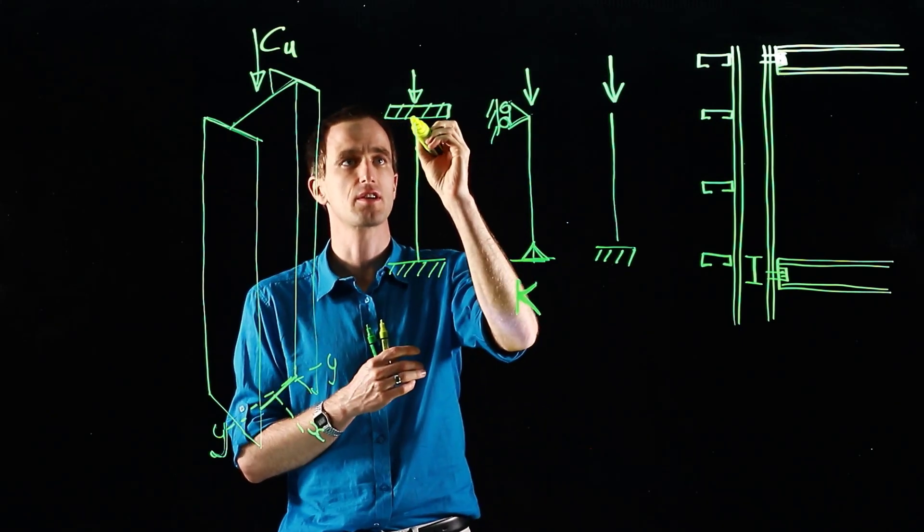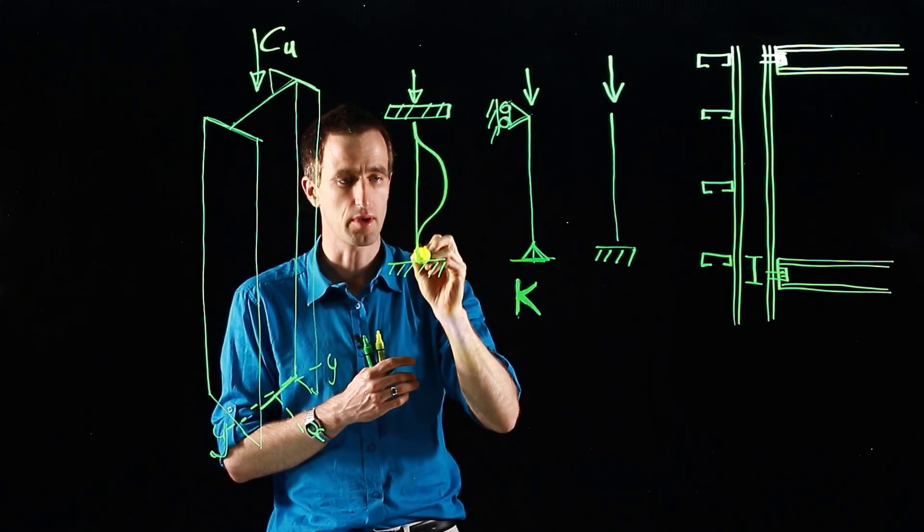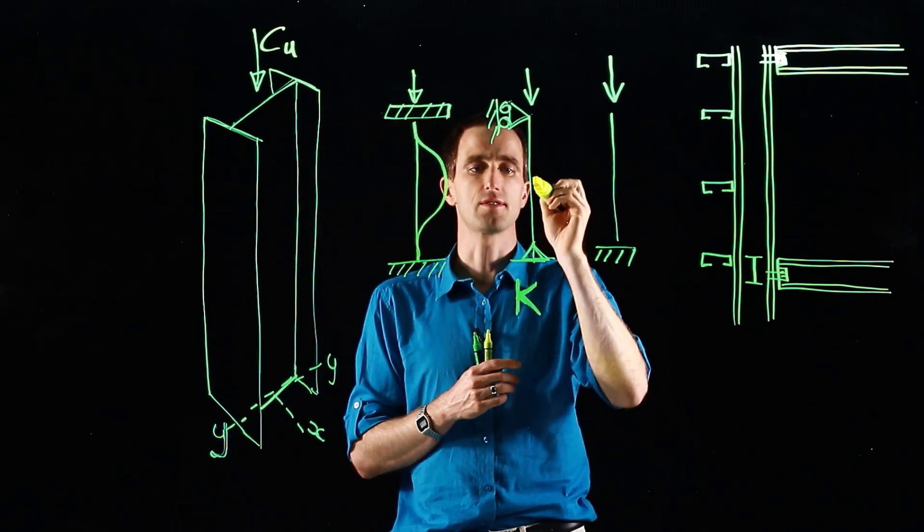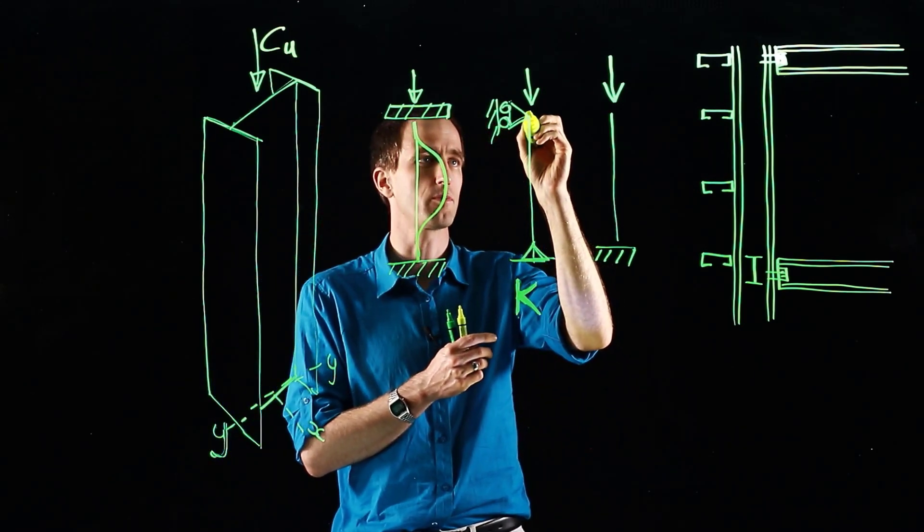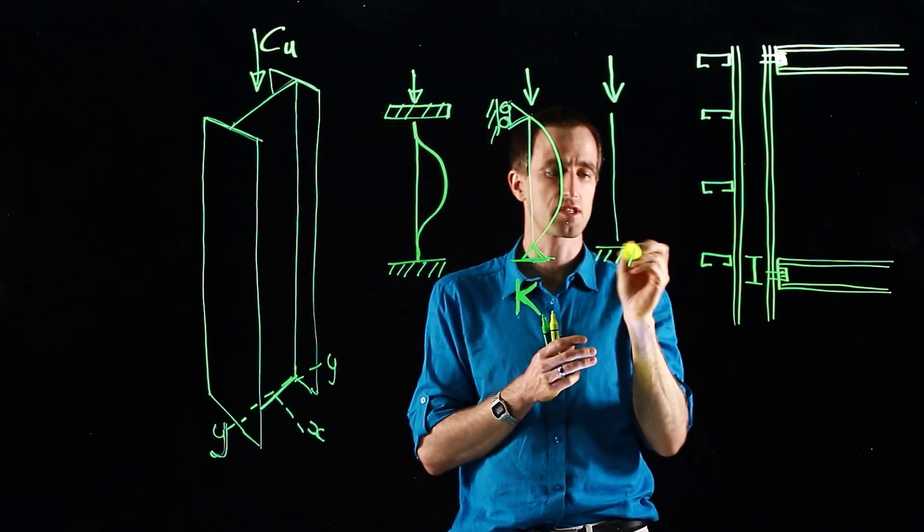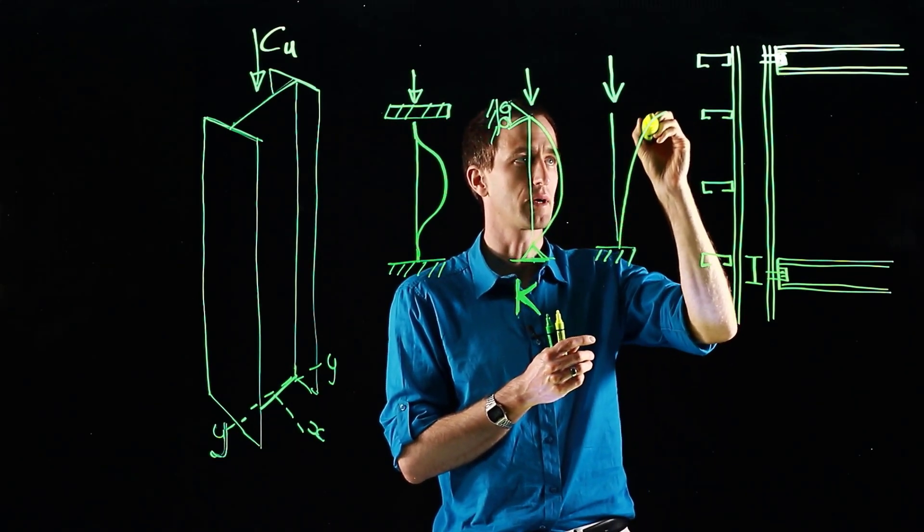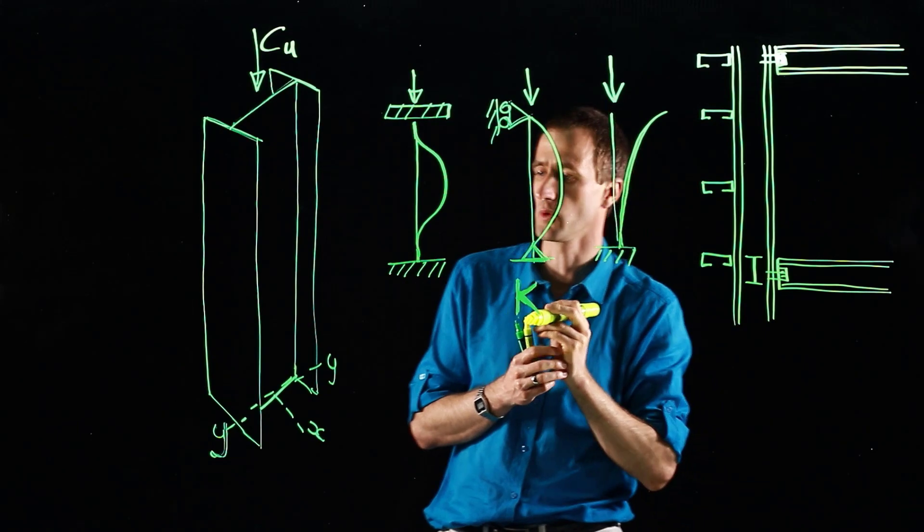If it's fixed fixed, it cannot rotate at the top, cannot rotate at the bottom, so you'd have a buckle shape like that. If it is pinned at the bottom, pinned at the top, when it buckles it has a shape like that. And lastly, if it's fixed at the bottom and free at the top, you've got a cantilever, and it kind of buckles like that with going vertically at the support.